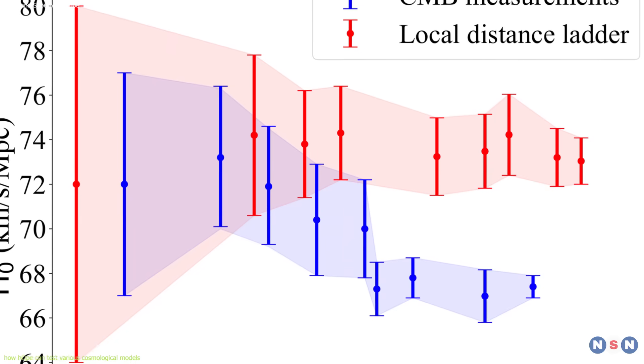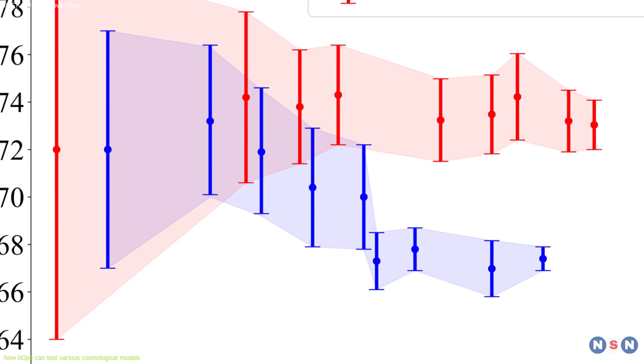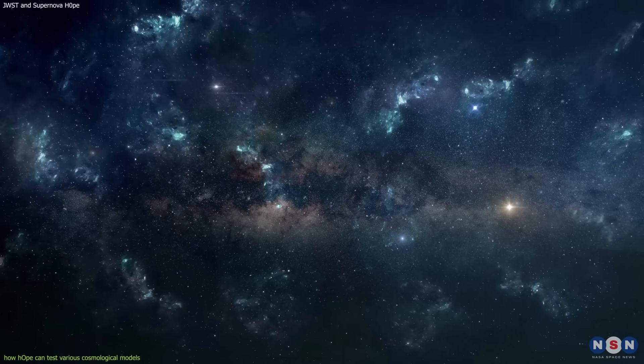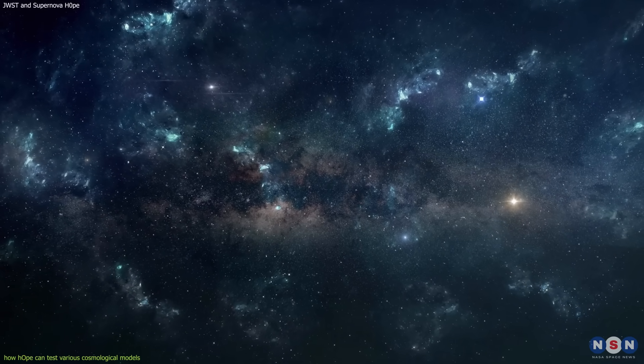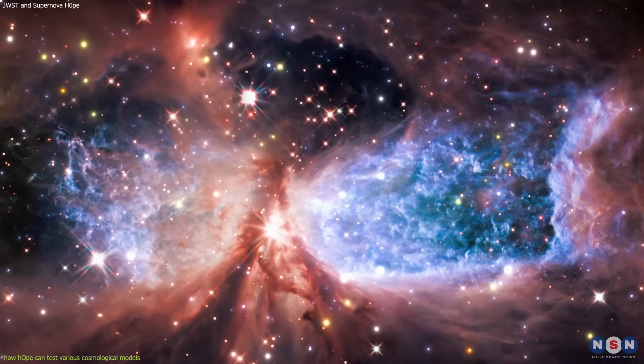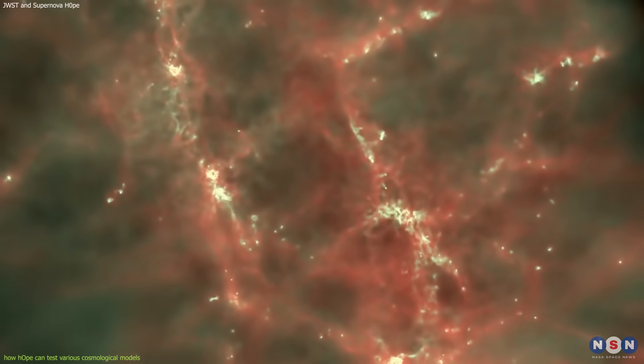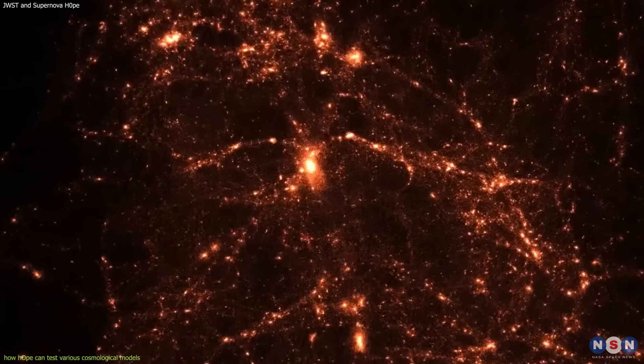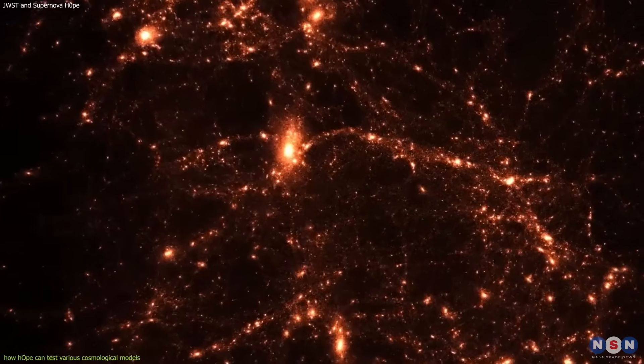Each of these models tries to explain the Hubble tension in a different way, either by introducing new physics or modifying existing physics. But they also make different predictions for other observables, such as the growth of cosmic structures, the formation of stars and galaxies, and the distribution of matter and radiation in the universe.